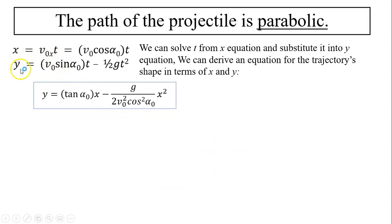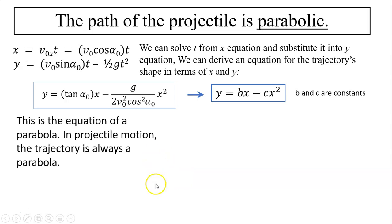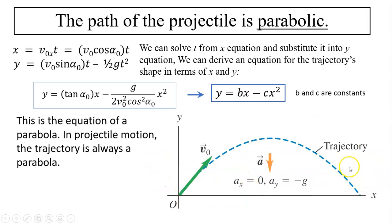Once you solve for t, substituting to this equation, this is what we have. Looks like it's constant times x minus another constant times x squared. This is an equation of a parabola. And that's how we know the trajectory is parabolic.